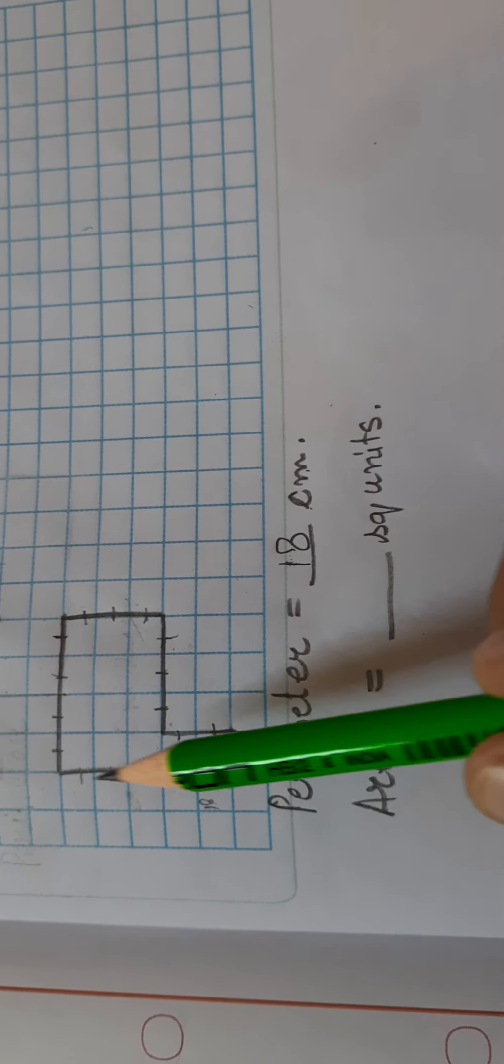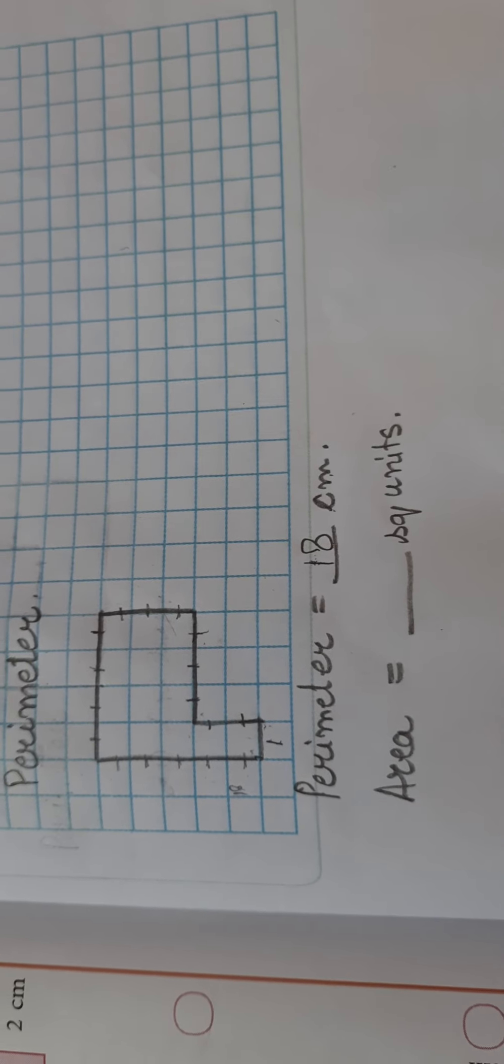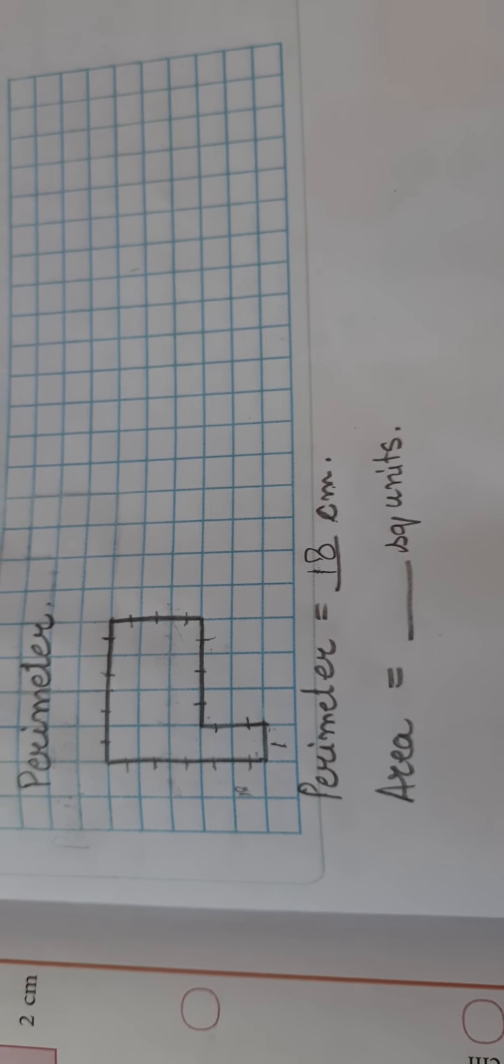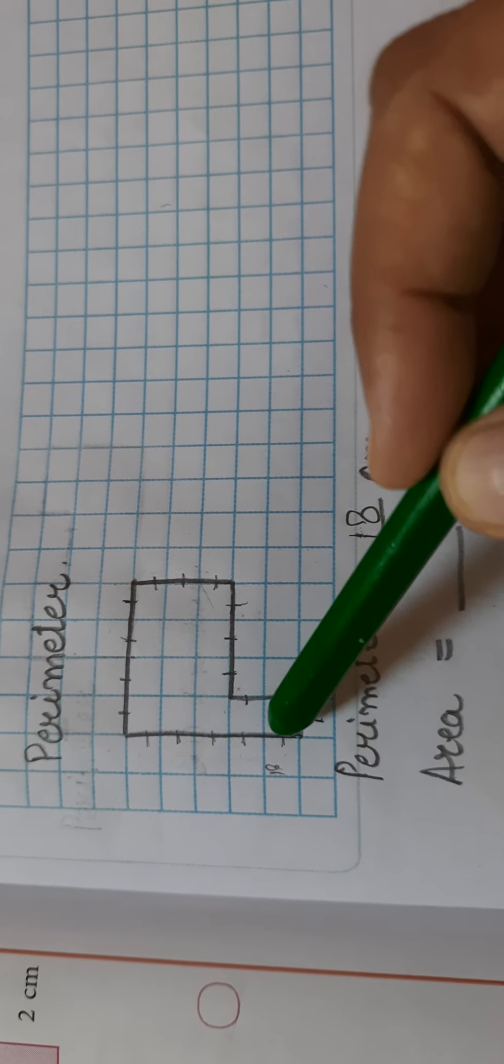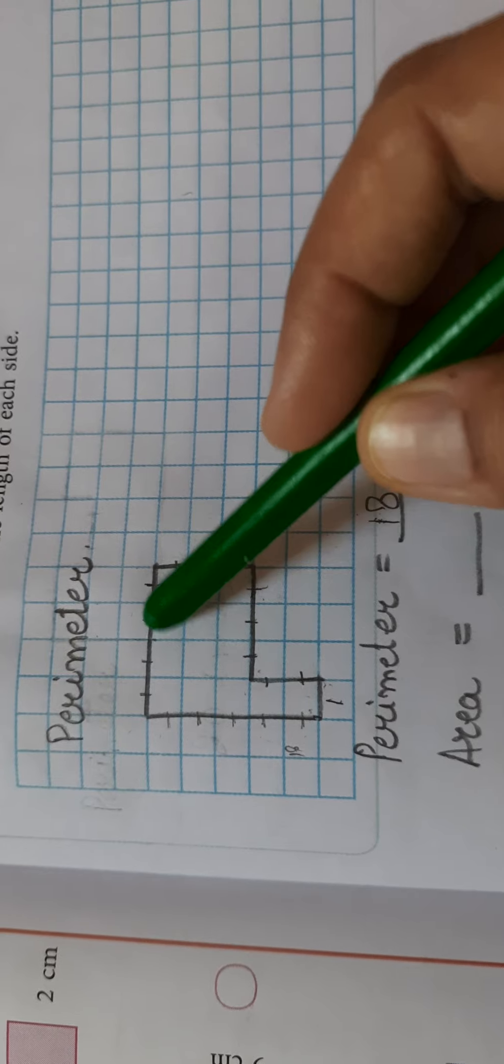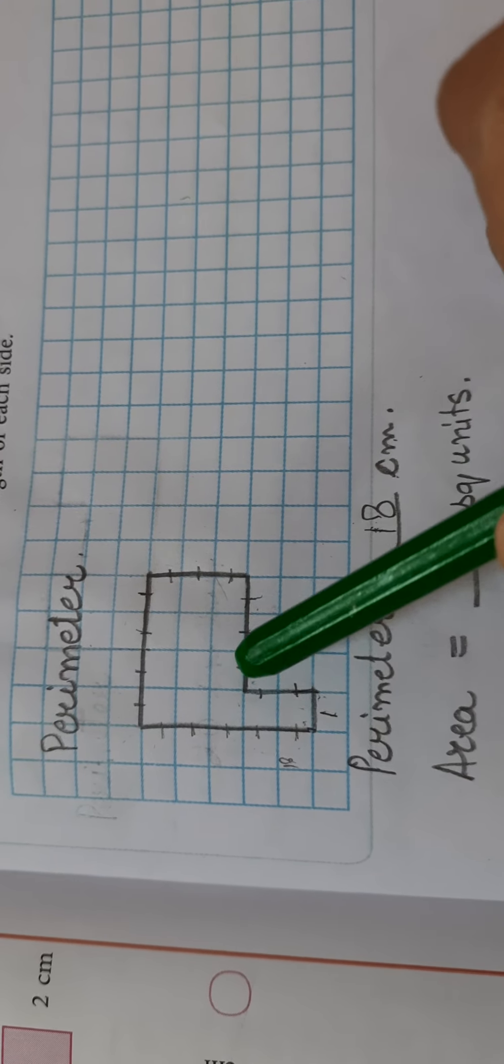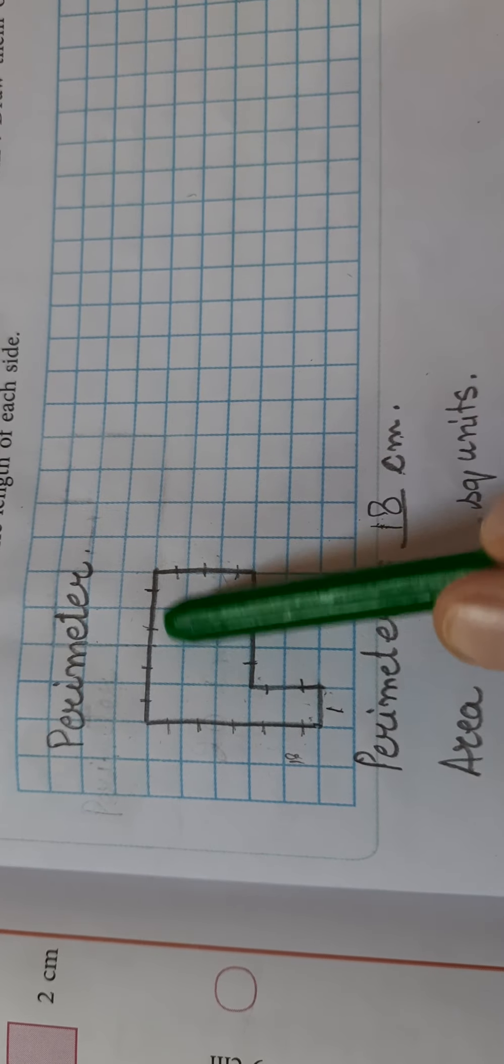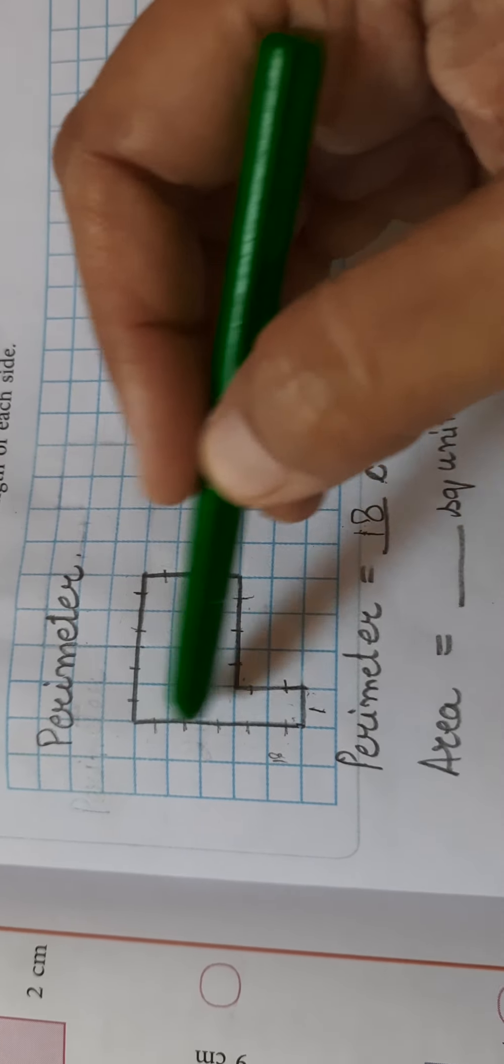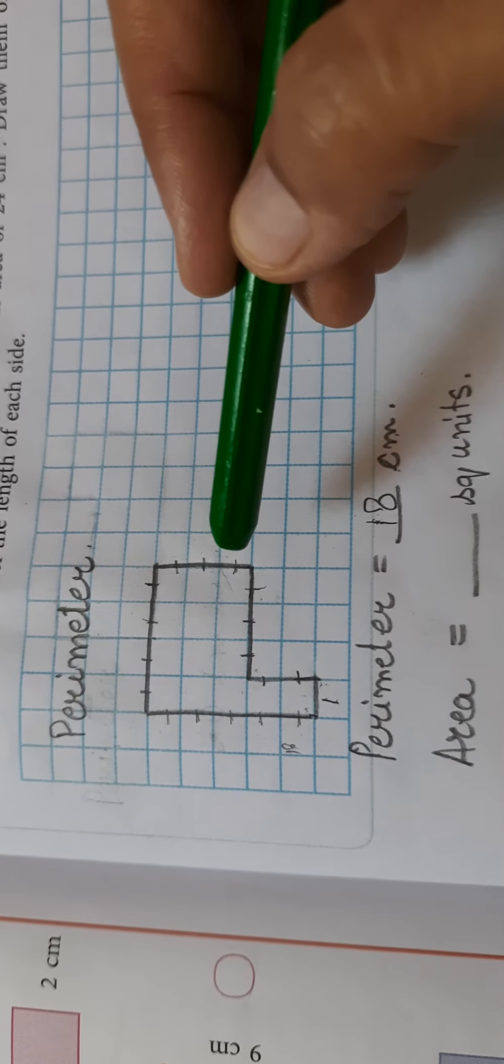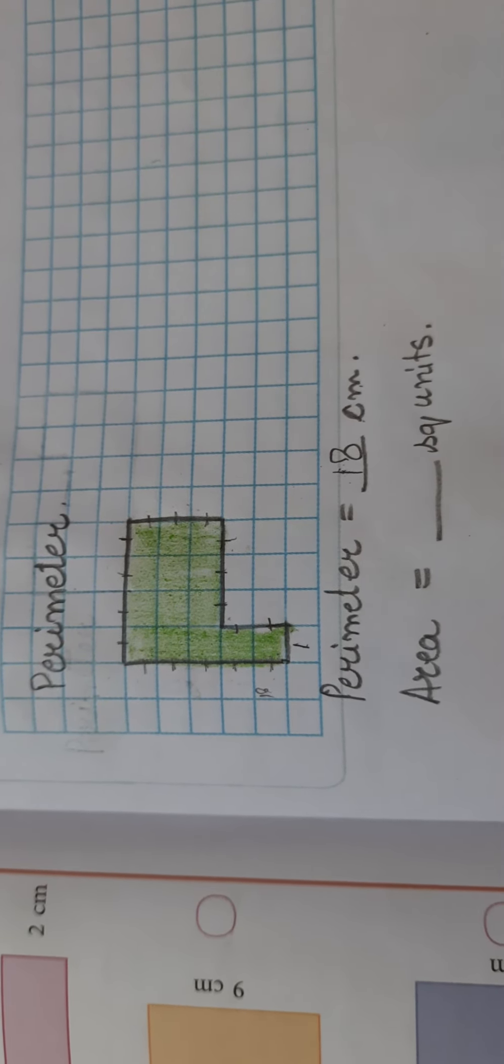Now if I will ask you what will be the area of the same shape, so the area here can be shown as the number of blocks which are present inside the area. That means the shape that this shape is covering these blocks also. So the blocks or the number of blocks this shape is covering will be the area of the shape.